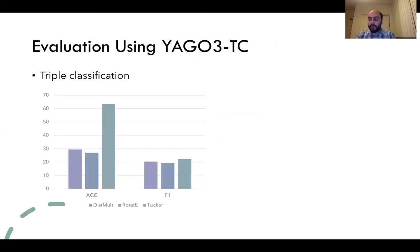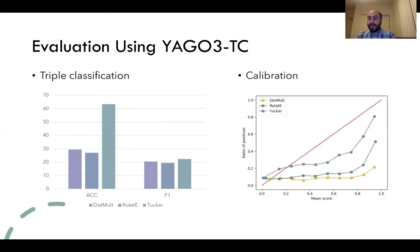Evaluating existing models on Yago-TC, we first observe that current state of the art models do not appear to be much better than very simple baselines in triple classification. Then, evaluating calibration on these benchmarks, we observe much more reasonable behavior for calibration over different models.